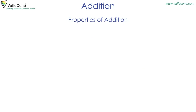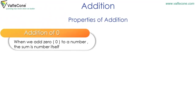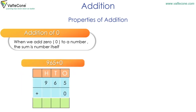Properties of addition. Addition of zero: when we add zero to a number, the sum is the number itself. For example, 965 plus zero is equal to 965.